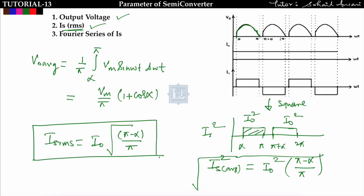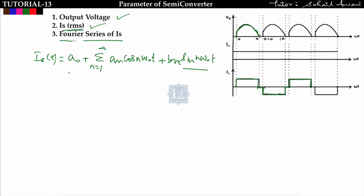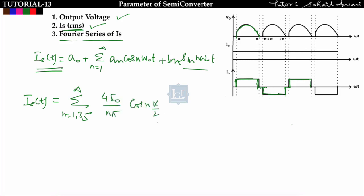Now find the Fourier series of the source current is(t). Using the general approach: is(t) = a0 + Σ[an·cos(nω0t) + bn·sin(nω0t)]. The derivation is not required; the result is that only odd harmonics are present. The Fourier series expression for source current is: is(t) = Σ[n=1,3,5,...,∞] (4I0/nπ)·cos(nα/2)·sin(nωt − nα/2). You must remember this expression because in an exam there is no time to derive it.